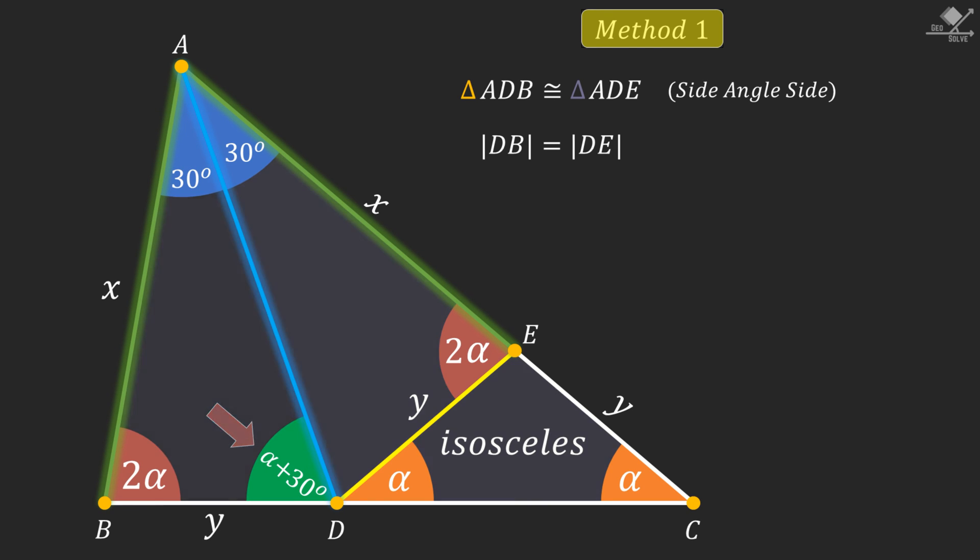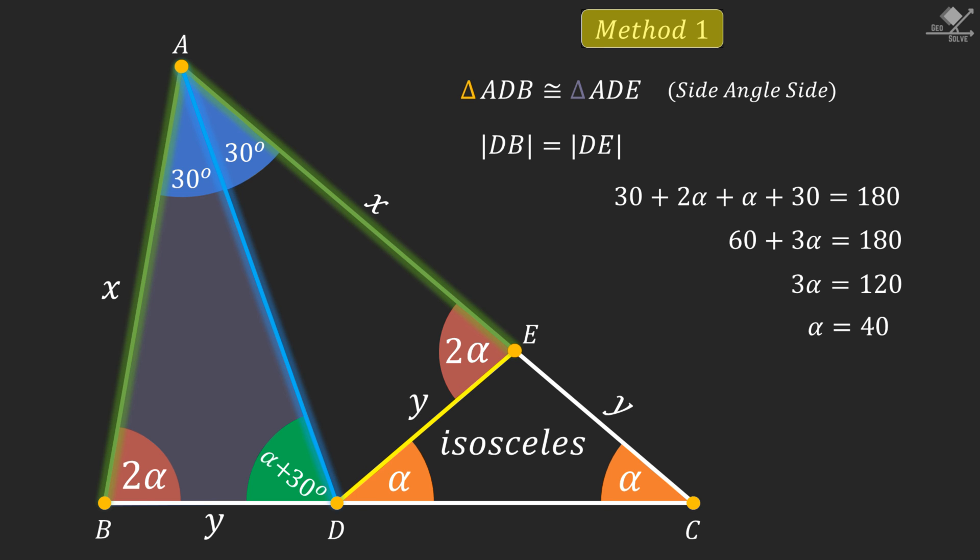Finally, pay attention to this shaded triangle. And sum up the internal angles to equate to 180 degrees. From here, 60 plus 3 alpha will be equal to 180 degrees. And from here, 3 alpha will be equal to 120 degrees. And alpha will be 40 degrees. And that is our answer.